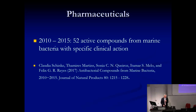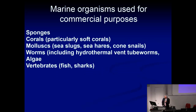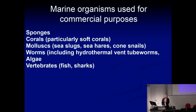In pharmaceuticals, between 2010 and 2015, 52 active compounds from marine bacteria with specific clinical action were identified. The resources providing genetic information most frequently include sponges — some cancer treatments have been developed on the basis of molecules containing sponge — as well as soft corals, molluscs, worms, algae, and vertebrates. One strong analgesic, with the commercial name Prialt, was derived from the venom of the Conus magus, a marine snail, and led to the development of a very powerful medicine against pain.